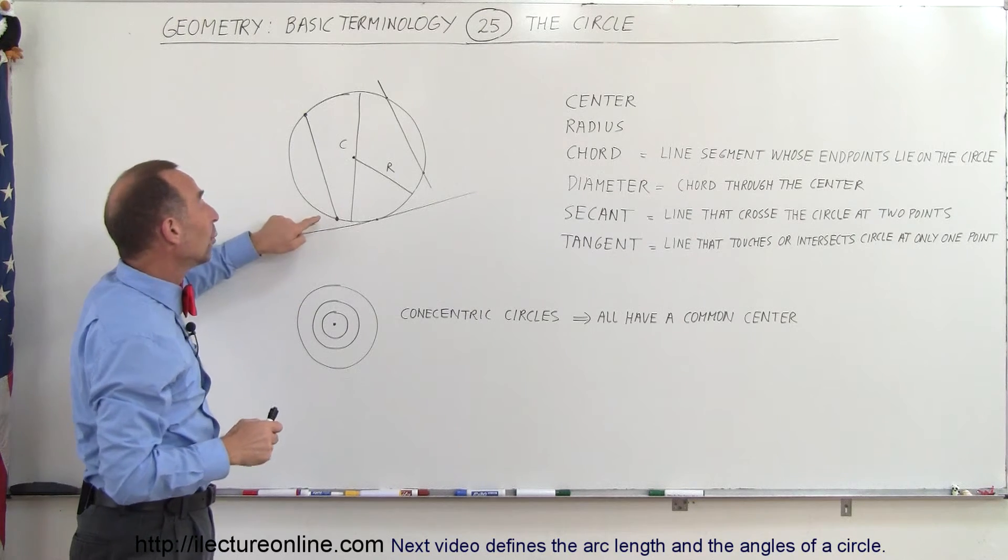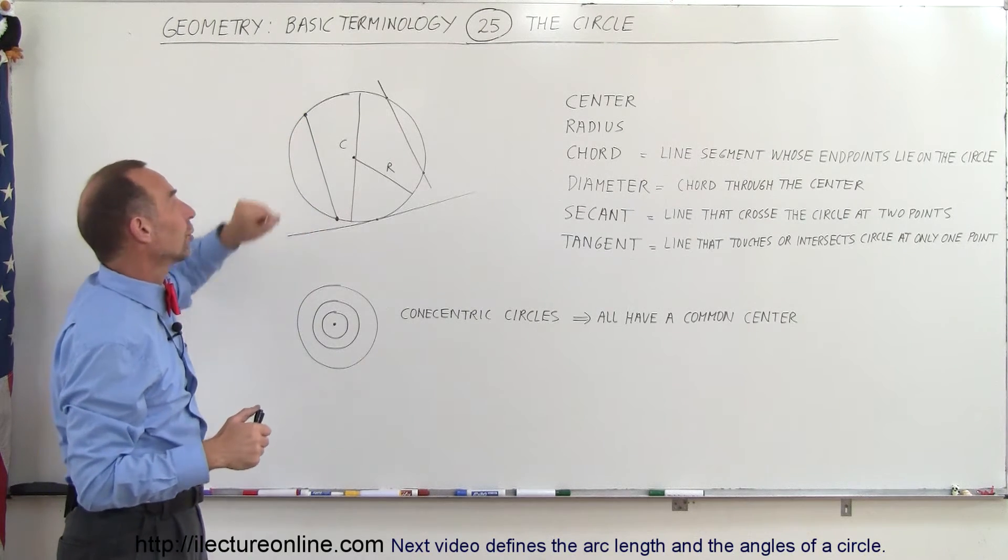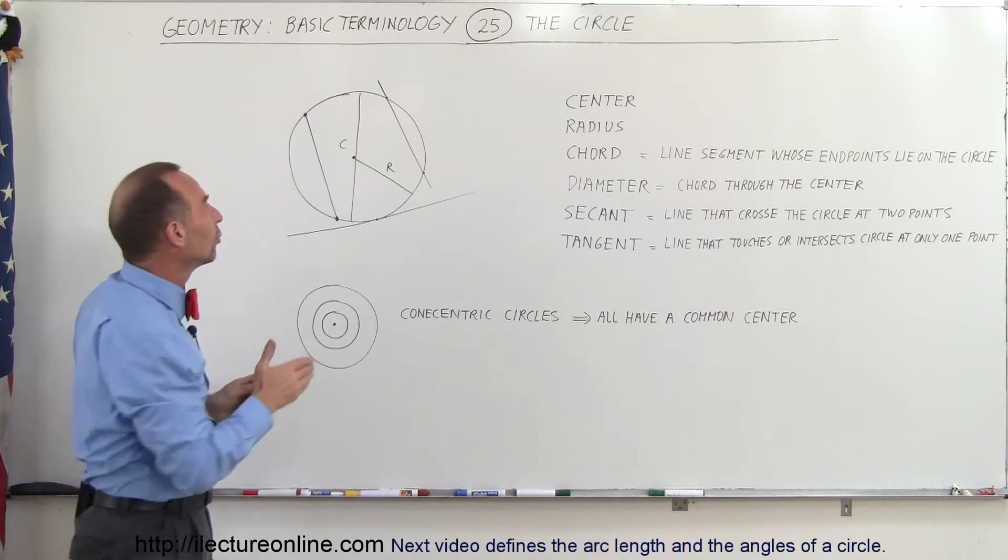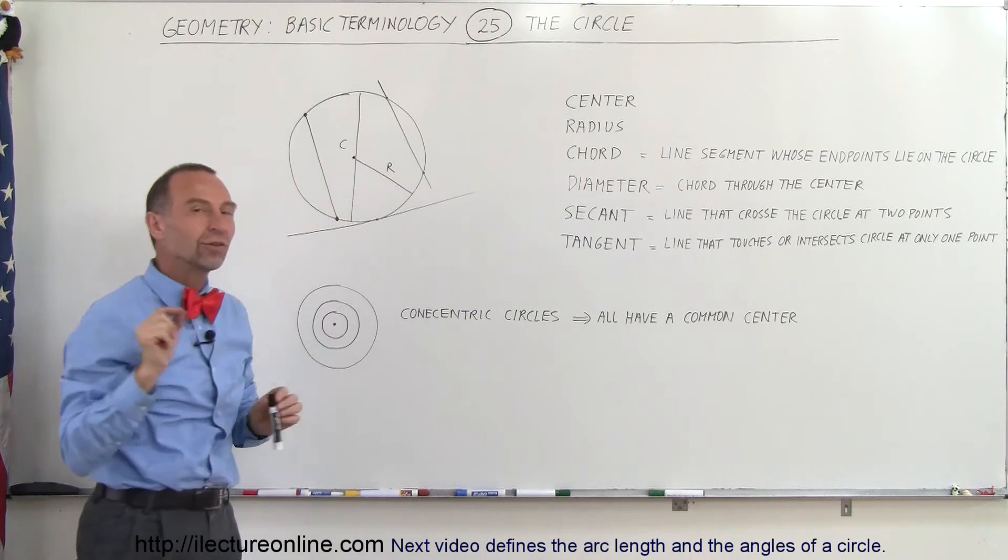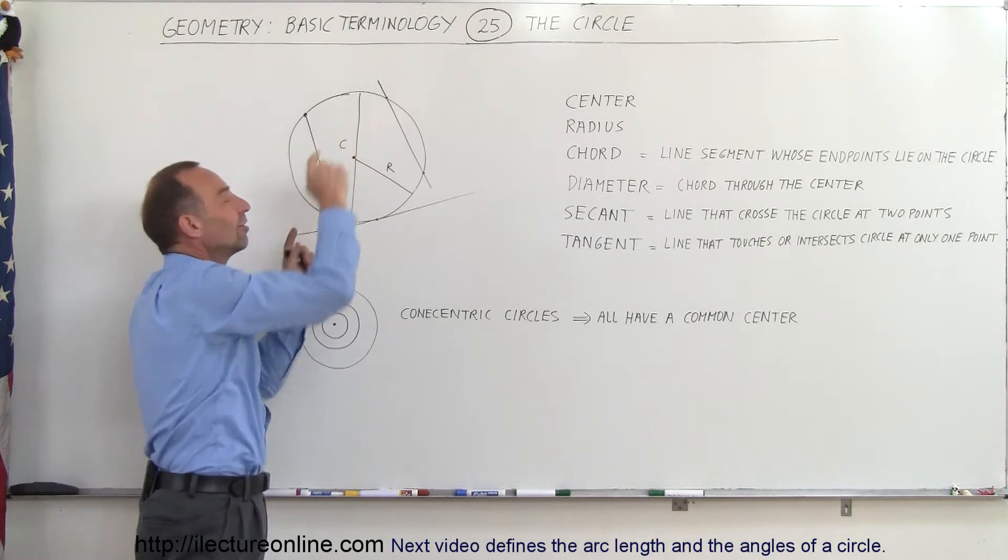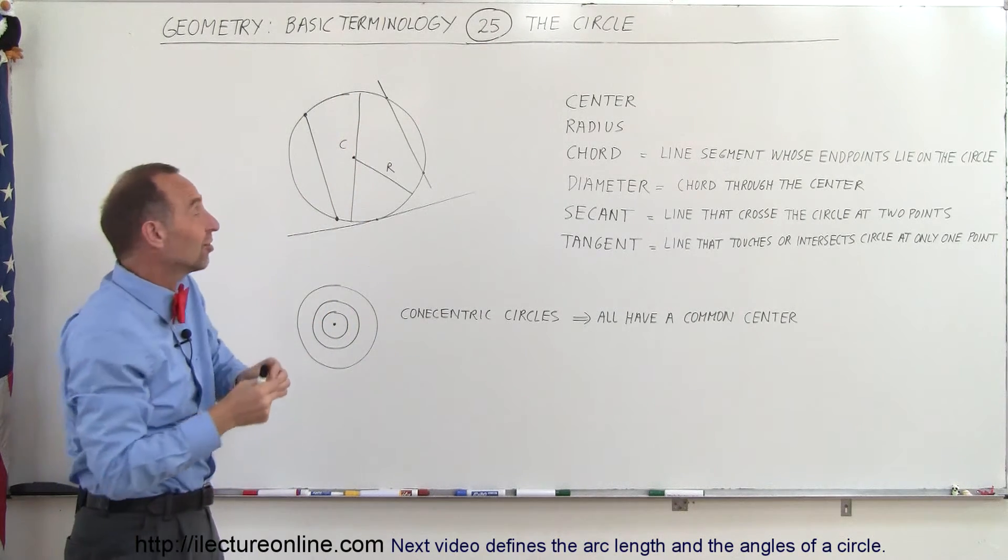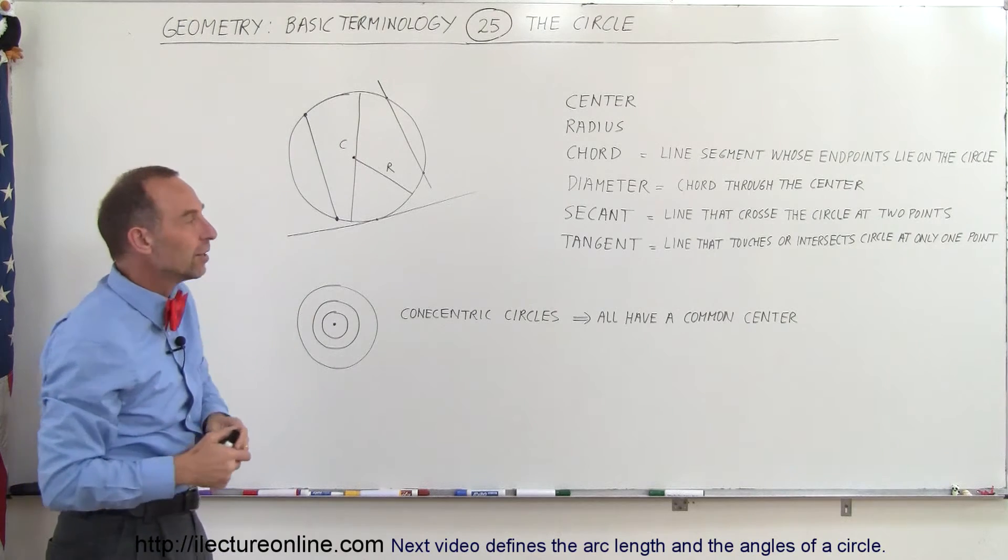A chord can run from any one point on the circle to any other point on the circle, and in one case, the chord will run right through the center. When the chord runs right through the center, that length of that chord is called the diameter, which is exactly twice the distance of the radius.